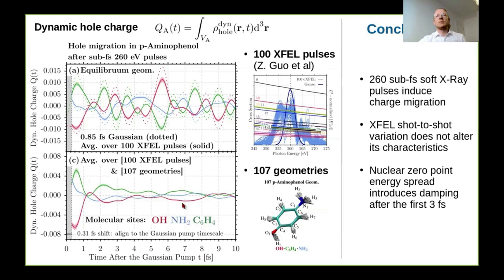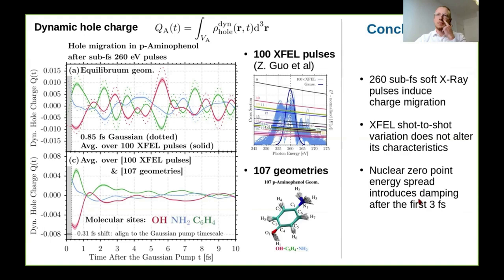The influence of the nuclear wave function seems to exceed the influence of the X-ray shot-to-shot variation. One can probably average over such a sample of pulses in these experiments because the characteristics are not altered too much — which is good news for the experiments. In conclusion, we see sub-femtosecond charge migration, the X-ray shot-to-shot variation does not alter its characteristics too much, but the nuclear zero-point energy spread of the wave function introduces damping after 3 femtoseconds.